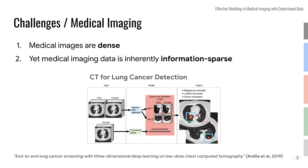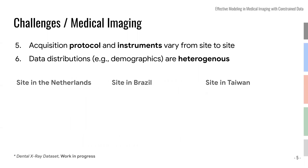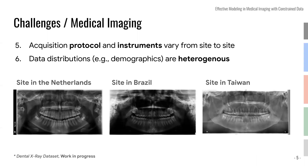There's another aspect around data distribution, where acquisition instruments and demographics for different sites can be vastly different. Still using the same dental dataset as an example — imaging is coming from three different sites: from the Netherlands, from Brazil, and from Taiwan. And there are clear differences you can see with your bare eyes, without even knowing what's in the images. The color contrast is just different, and you can see different annotations on the side of the images coming from the instruments themselves.